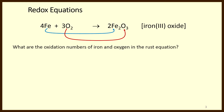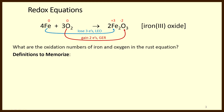What are the oxidation numbers of iron and oxygen in the rust equation? Elemental iron has oxidation state zero. In iron(III) oxide, the oxidation state of iron is, of course, plus three. Notice that iron loses three electrons — going from zero to plus three, it must have lost three negative charges. A loss of electrons is defined as oxidation. At the same time, oxygen gains two negative charges, or gains two electrons, as it goes from zero to negative two, and a gain of electrons is defined as reduction.